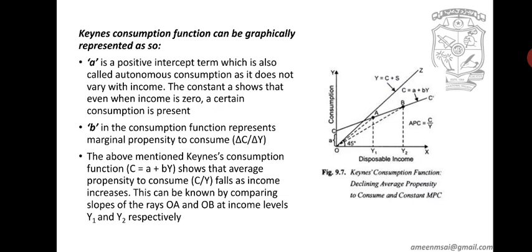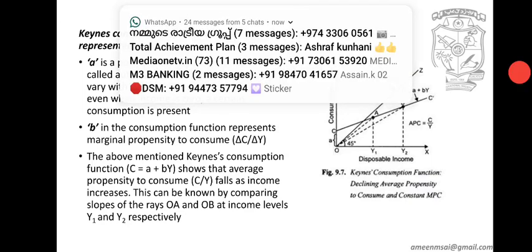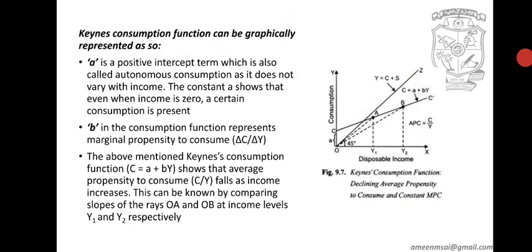The slope measures MPC — the marginal propensity to consume. If we connect those points to the origin, OA will have a greater slope than OB. Comparing the two rays shows that APC decreases as income increases. This is the absolute income hypothesis.